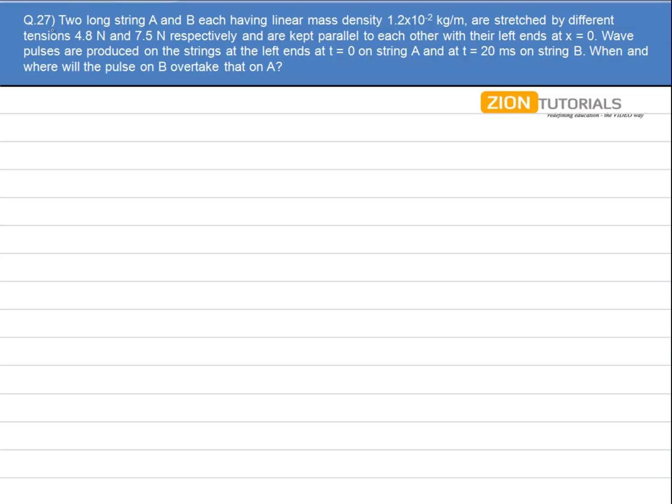Two long strings A and B, each having linear mass density 1.2 x 10^-2 kg per meter, are stretched by different tensions 4.8 N and 7.5 N respectively, and are kept parallel to each other with their left ends at x equals 0. Wave pulses are produced on the strings at the left end at t equal to 0 on string A and at t equal to 20 milliseconds on string B. When and where will pulse B overtake pulse A?